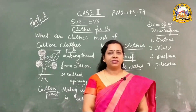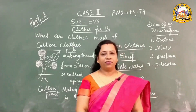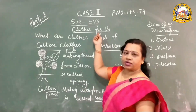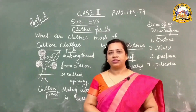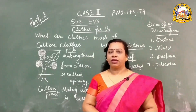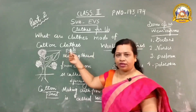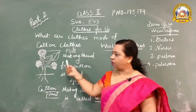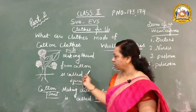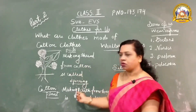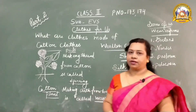Let us have a quick recap of what we have discussed. We covered 'Clothes for Us.' In a previous video we discussed which types of clothes are necessary and what we wear in different seasons. Here we discussed that we wear cotton clothes in summer. Cotton grows in pods; we pick the pods and make thread from the cotton — this is called spinning. Making cloth from thread is called weaving.